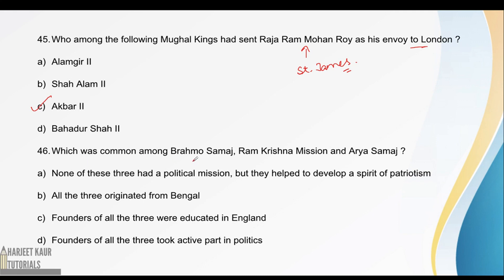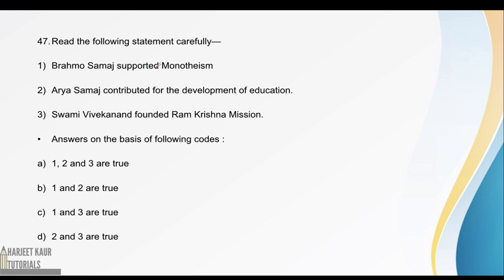Next: what was common among Brahmo Samaj, Ram Krishna Mission, and RS March? The answer is option A — none of these three had a political mission, but they helped to develop a spirit of patriotism. Now consider the statements carefully: the first statement is that Brahmo Samaj supported monotheism, meaning belief in one God. Brahmo Samaj promoted monotheism — this is absolutely correct.